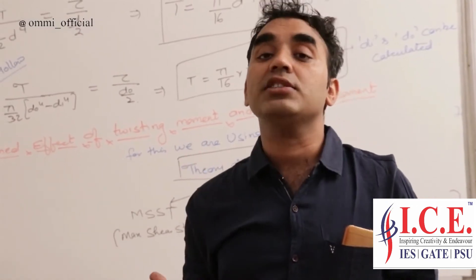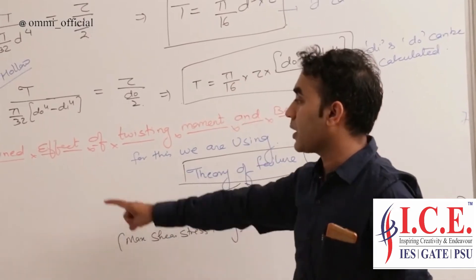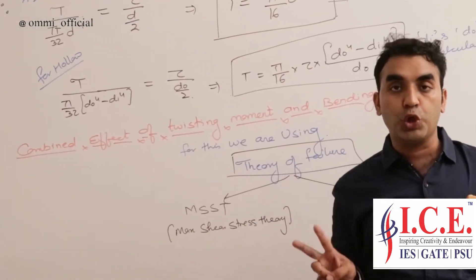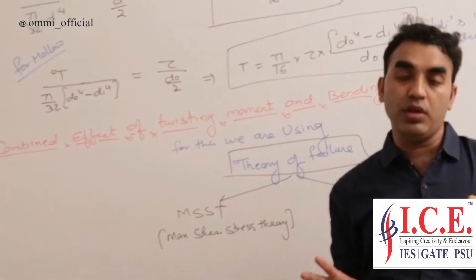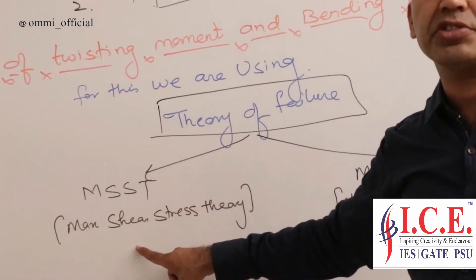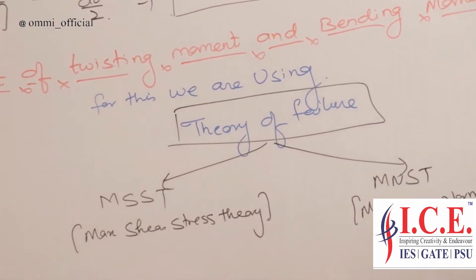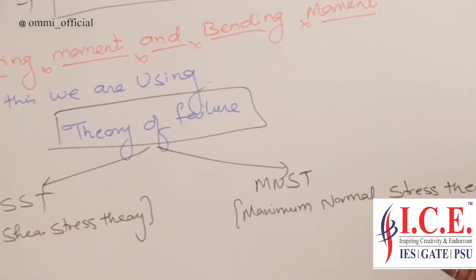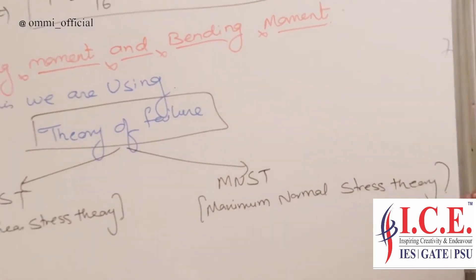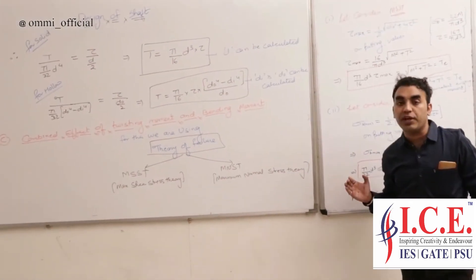Now, the biggest consideration for the design is the combined form. In the combined effect, we always consider two theories of failure. Theory number one is MSST — that is Maximum Shear Stress Theory. The second theory is MNST — Maximum Normal Stress Theory. We are going to consider a brief overview of these two different theories.